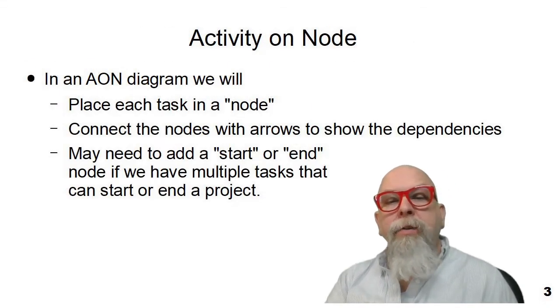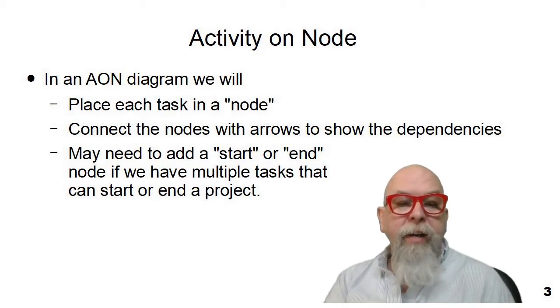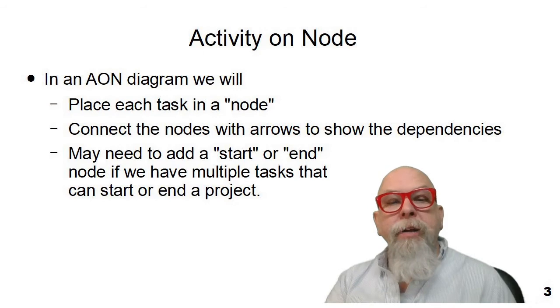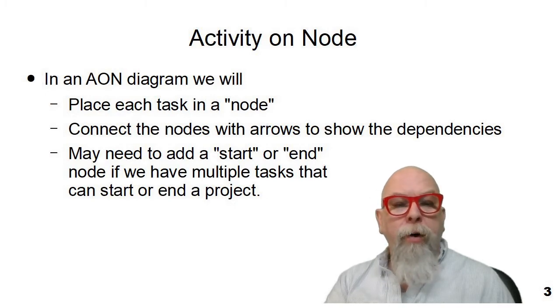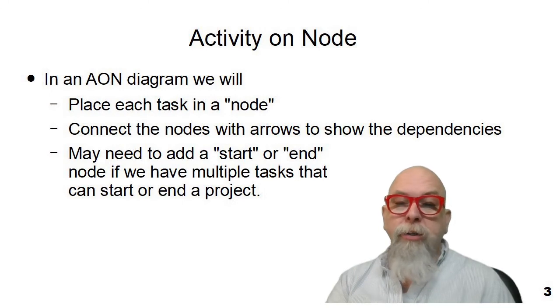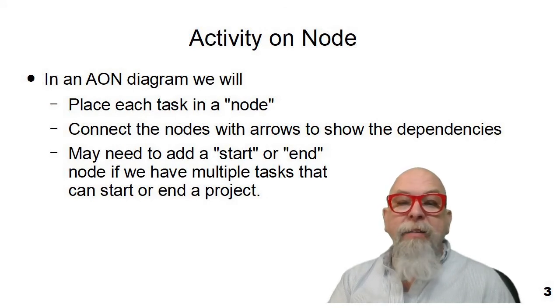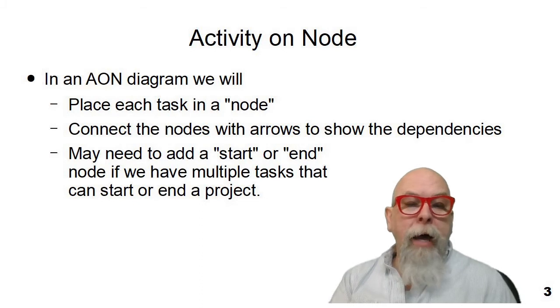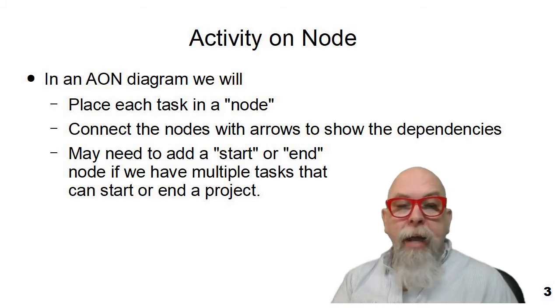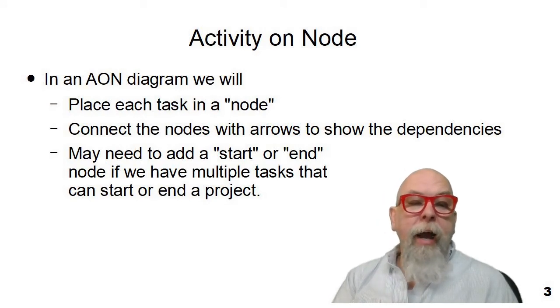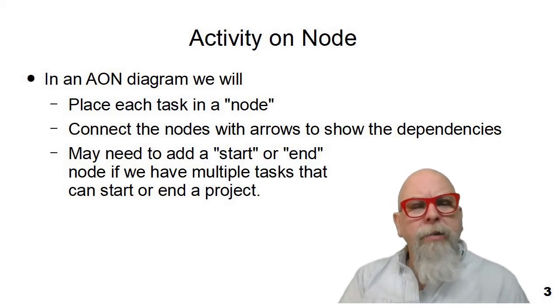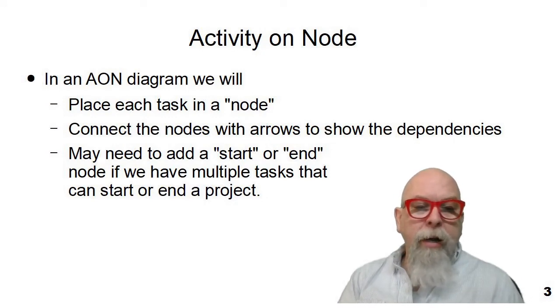In an Activity on Node diagram, we will place each task of the activity in the node or in the circle or whatever shape we use for the node, and we will connect the nodes with arrows to show their dependency. This works really well for start or finish to start relationships. We also may need to add a start or end node if we have multiple tasks that can start or end a project, but it's optional and may be left out if we have a network that we're diagramming that does not have multiple tasks at the start or multiple tasks that can finish.